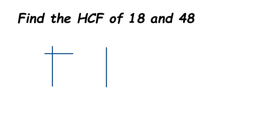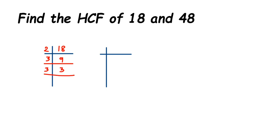We have number 18, and we want the prime factorization, which means we use only prime numbers to factorize it. Starting with 2 — 2 × 9 = 18. 9 is odd, so it doesn't go in the 2 table. Next prime is 3: 3 × 3 = 9, then 3 × 1 = 3. So we stop there.